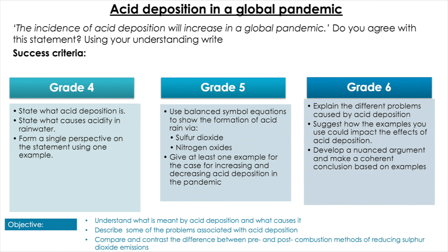To explore this in the real world, here's a mini project: the statement is 'The incidence of acid deposition will increase in a global pandemic.' Do you agree? I've outlined the criteria for what makes a good or bad argument and how you should be justifying and developing a nuanced and balanced argument at each step. You need to look at how human activity has changed in a global pandemic and how that will affect the different processes influencing acid deposition — whether they increase or decrease — and whether you agree with the statement.